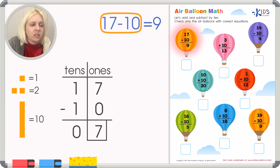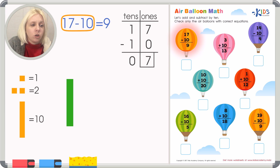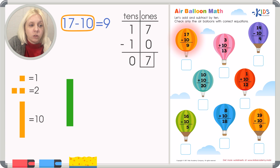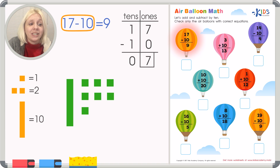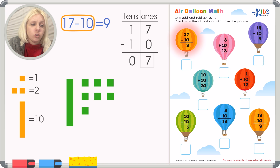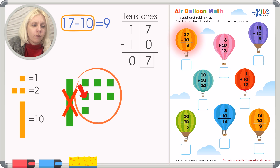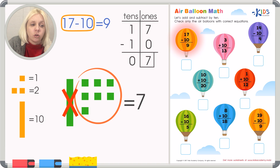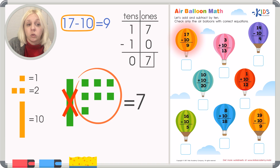For the number 17, we draw one column of ten plus seven individual units. We're subtracting 10, so we just cross out the whole column. Then we count whatever is left: seven individual cubes. So 17 minus 10 equals seven. Both methods — the T-chart and base 10 blocks — confirm the answer is seven, not nine. So we are not putting a check on this balloon.